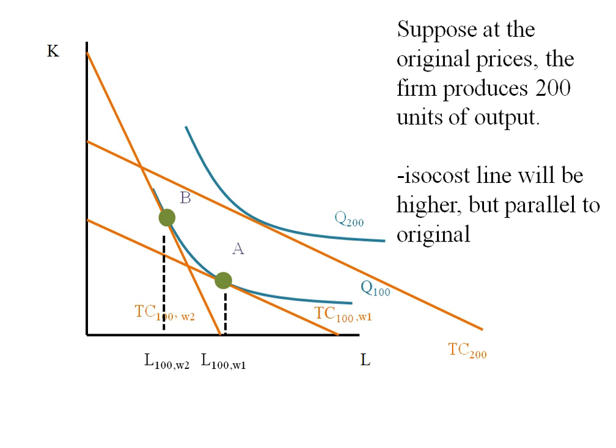I'm going to call that TC 200. You could also put a comma W1 there if you like. Let's call that tangency bundle C and bundle C is going to contain a particular amount of labor corresponding to producing 200 units of output at a wage of W1.